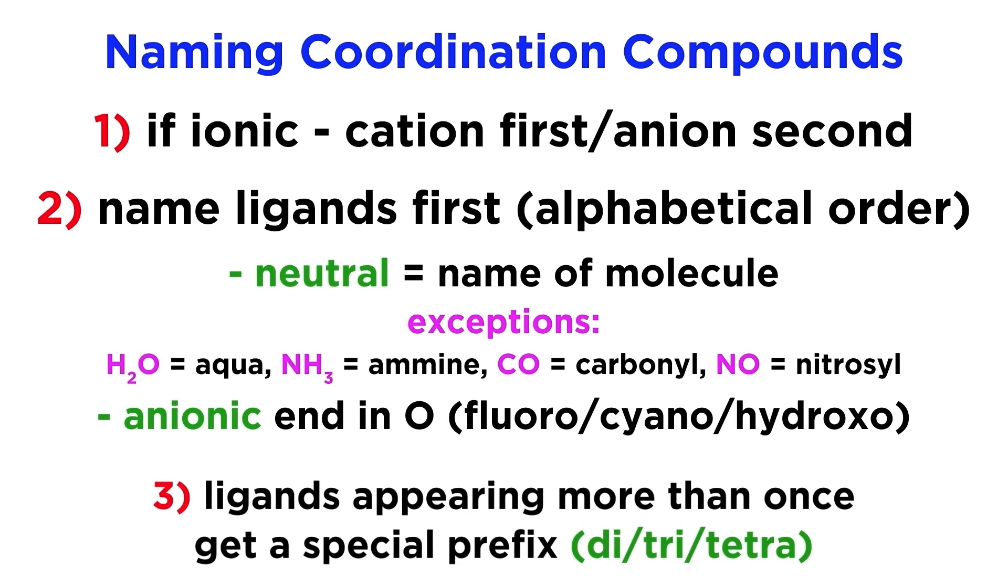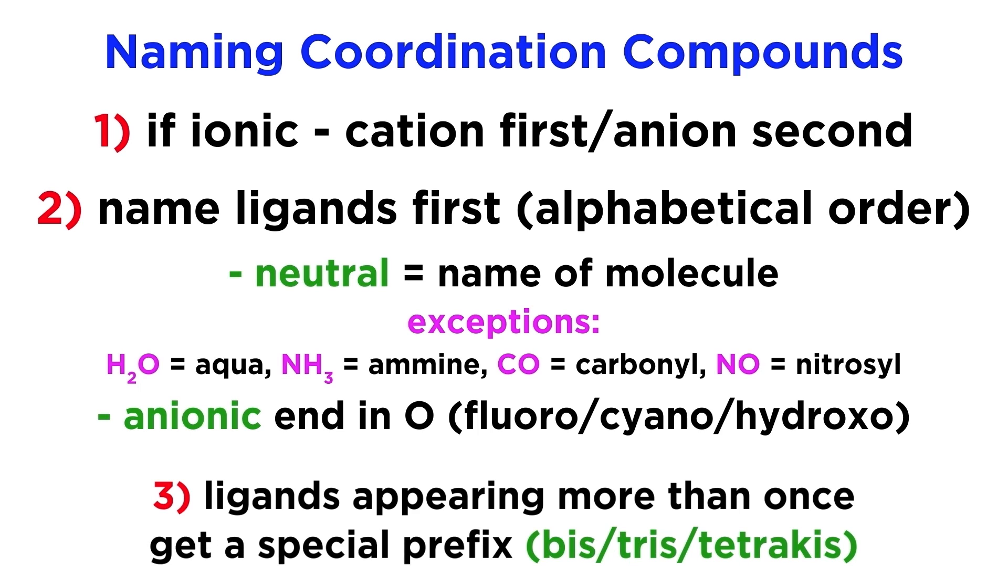The third and final rule is that if a particular ligand appears more than once in a coordination compound, we must specify this using a special prefix indicating the number of times it appears. Sometimes these prefixes are modified if the ligand itself begins with one of those prefixes, or a vowel, so as to remove ambiguity, resulting in the prefixes bis, tris, and so forth.